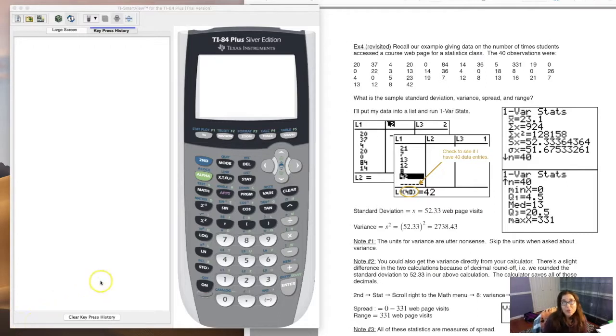Hey gang, we're back with example four. Instead of being asked to find the mean and the median, now we're asked to find all sorts of measures of spread. So we want the sample standard deviation, sample variance, the spread, the range. Anytime I ask you to get me some statistics, use technology. We've got it at our disposal, so let's use it.